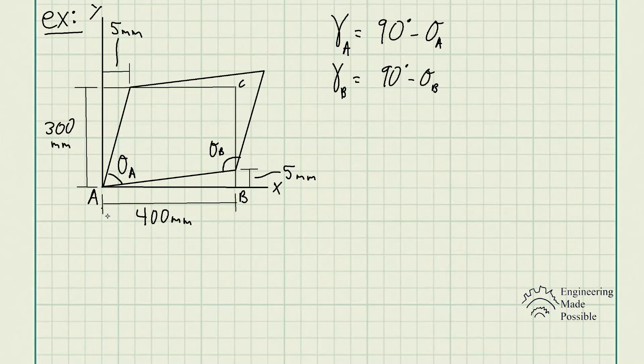So the rest of the things we're given, we have point A, point B, point C. We have the original dimensions of the square, which is 400 millimeters. The height is 300 millimeters. And we see a deformation here, 5 millimeters here, 5 millimeters here.